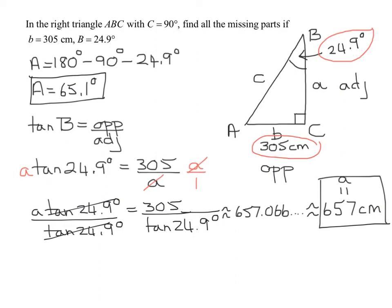So what I need to do now is set up a trig function involving the two given pieces of information. I want to use those if at all possible because I know they're correct, and the side I'm trying to find now, which is C. And C, remember, is the hypotenuse.